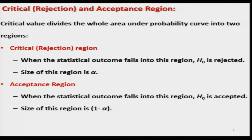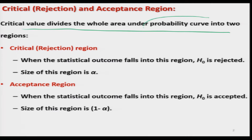For a quick revision, our basic objective is to define a critical region — that means we want to divide the sample space of x1, x2, ..., xn into two parts: one region where the hypothesis is accepted and another where it is rejected. We have critical values which divide the whole area under the probability curve into two regions — which can be t, chi-square, f, or normal distributions.